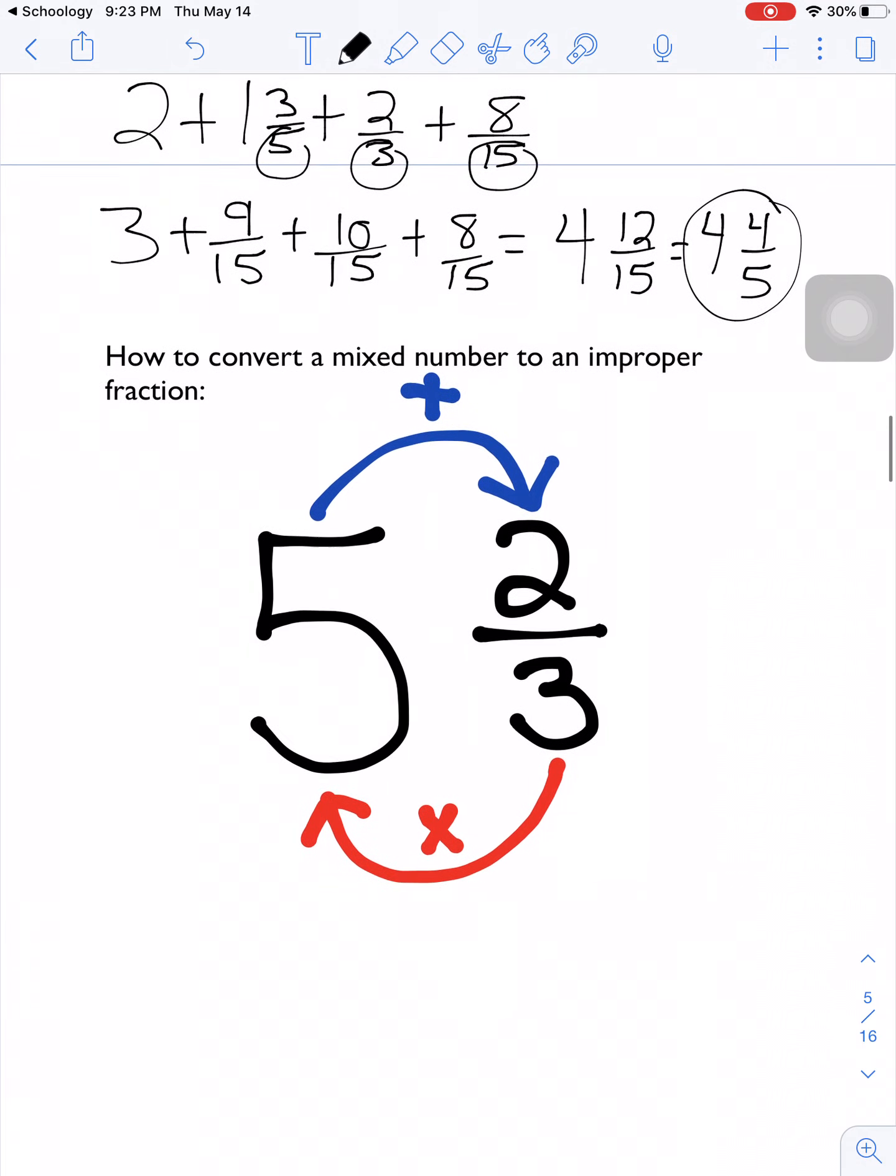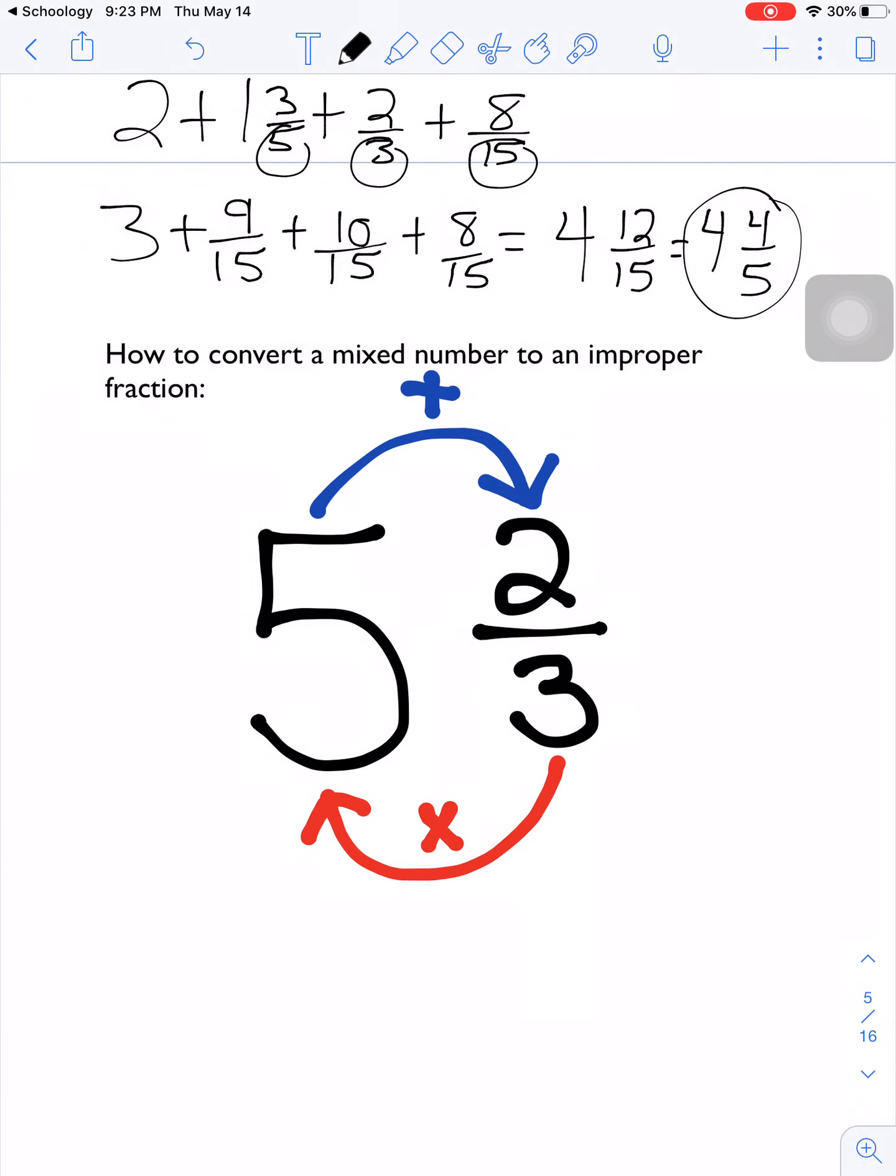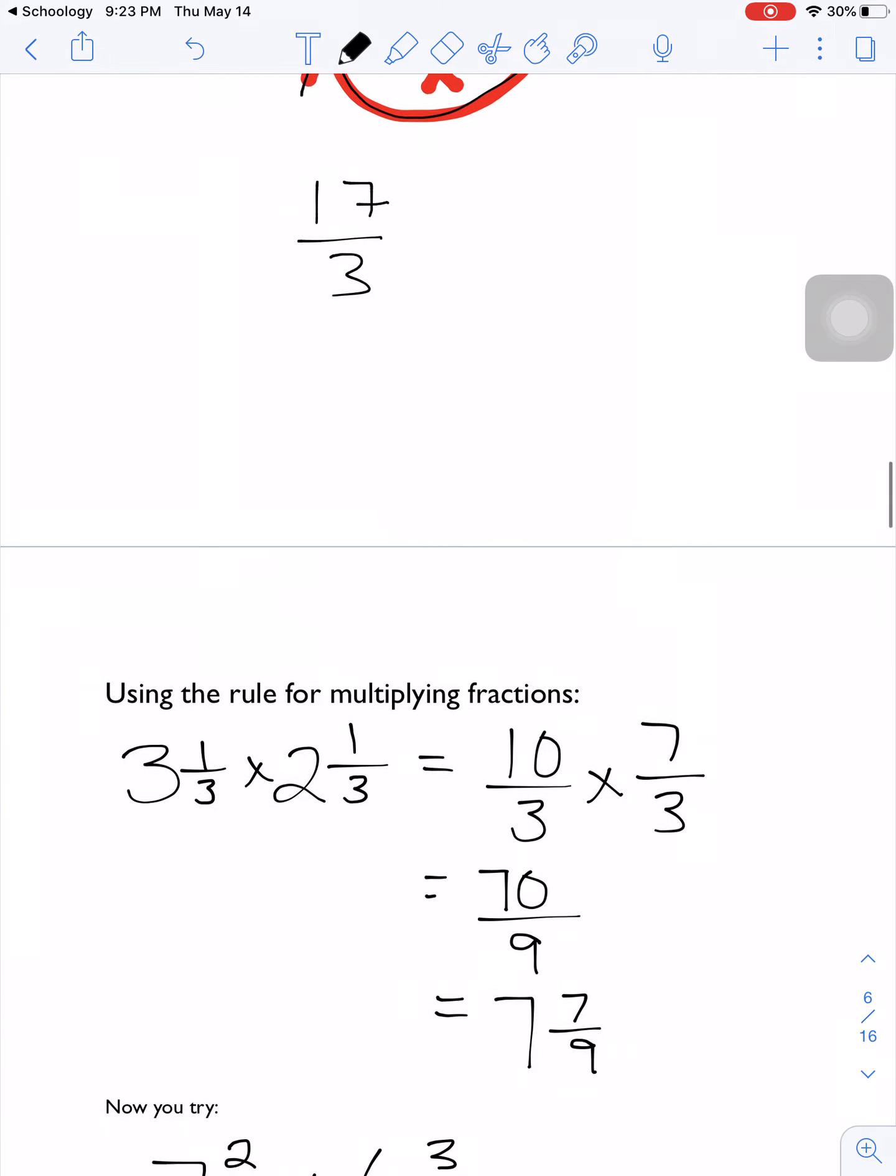There is an easier way. Before we talk about the easier way, we have to learn how to convert mixed numbers back into improper fractions. So we take the number of parts that the whole is being divided into and multiply that times the number of wholes that we have. So 3 times 5 is 15, so 15/3 would be 5 wholes. Then we add the parts that we have, so we have 2/3 in parts. So we're going to add the 2 to 15, so that ends up being 17/3.